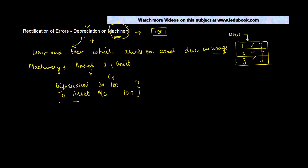Here the first error is no posting done, right? So what happened is you did not post anything in your ledger, which means that this entry was not passed both for the debit and the credit.